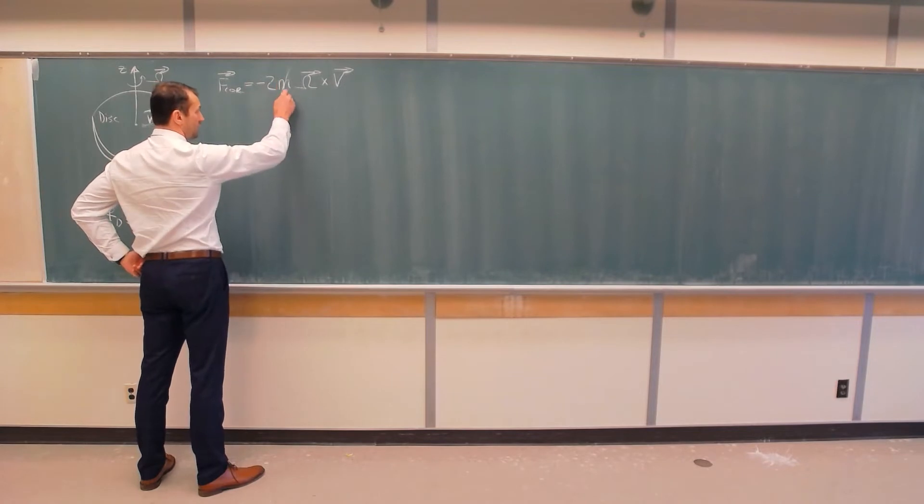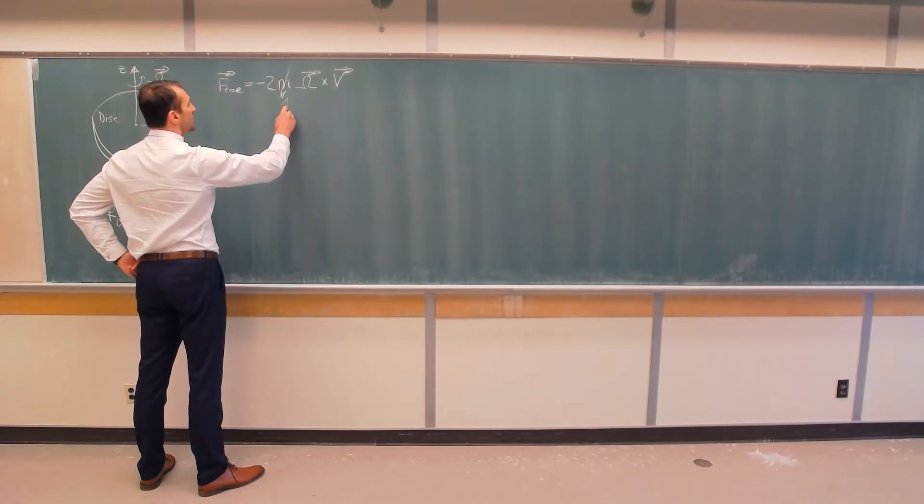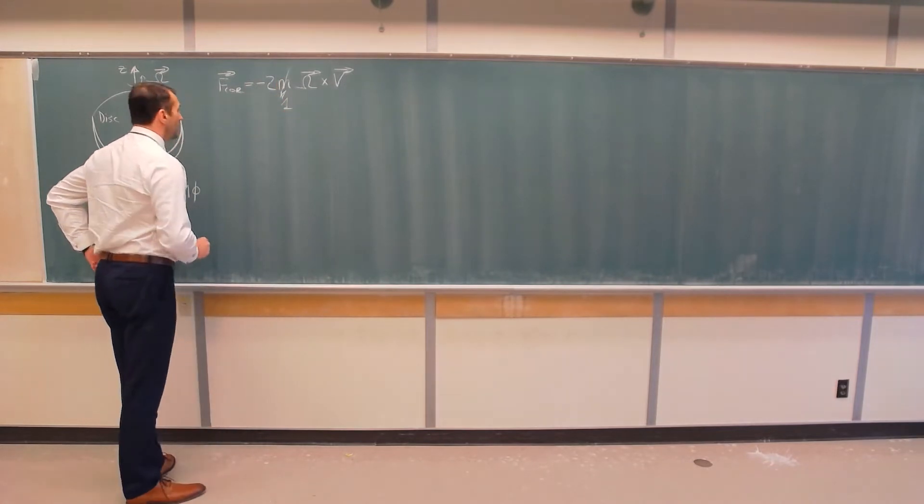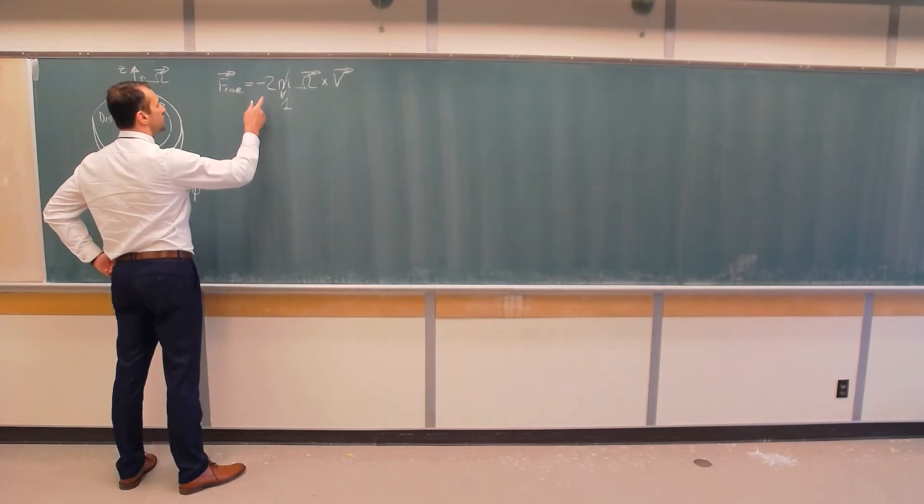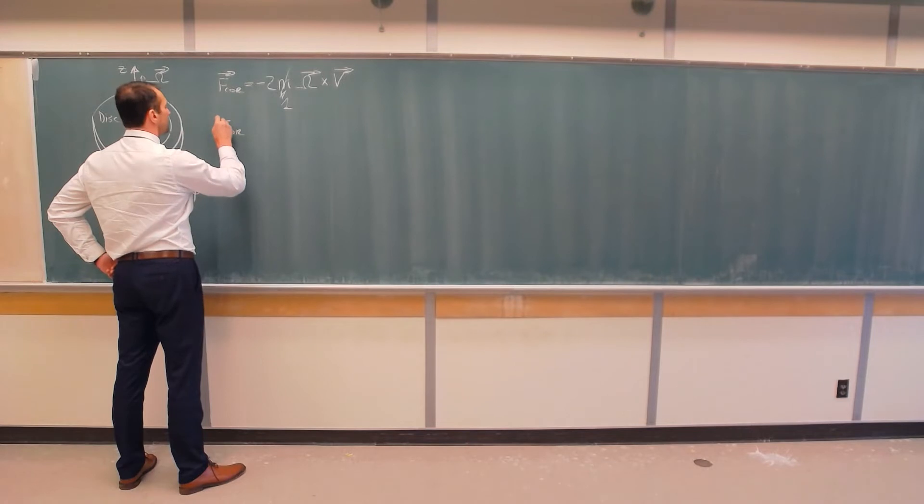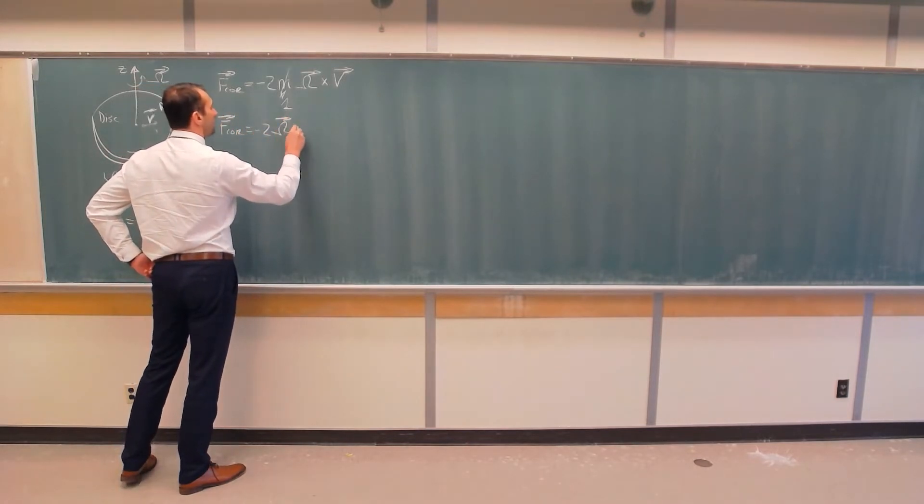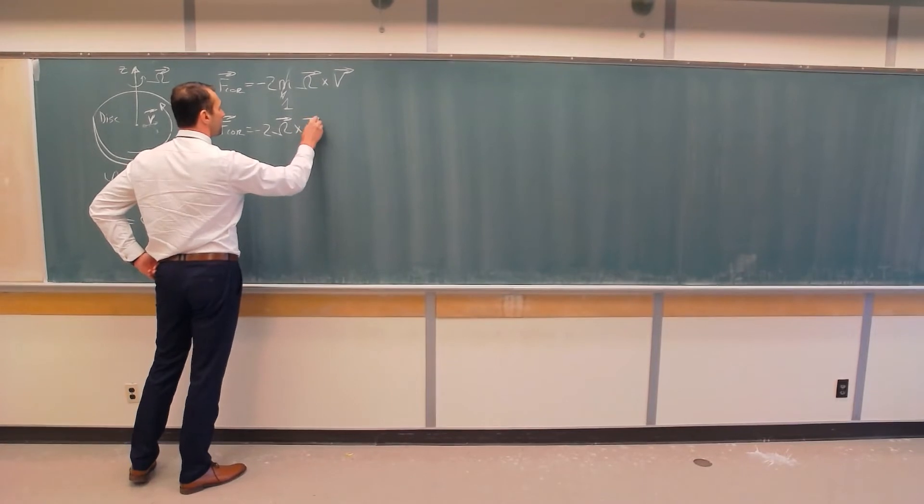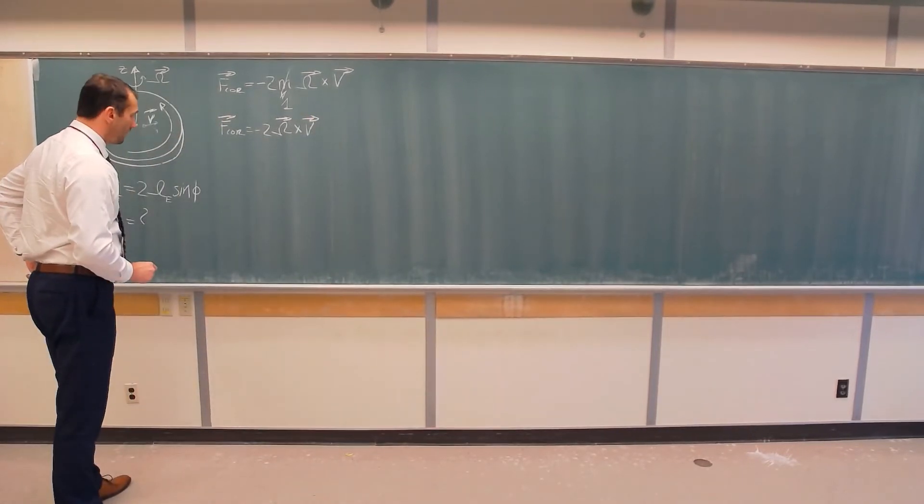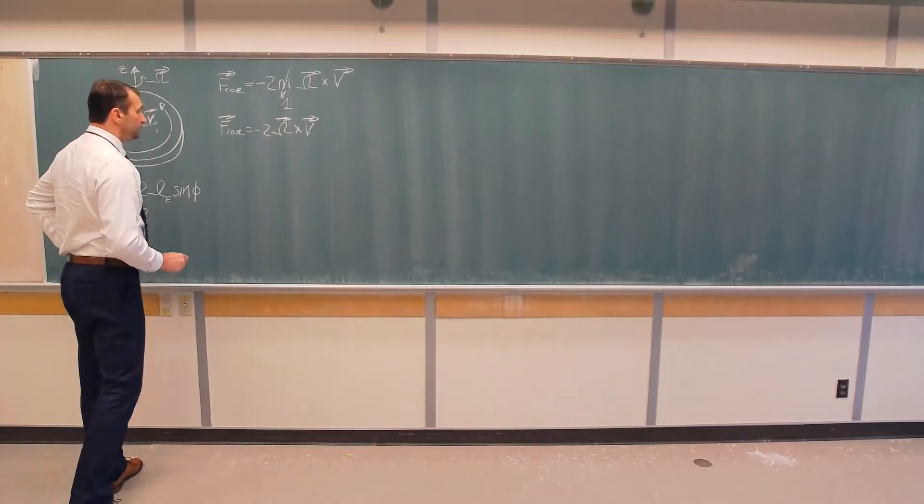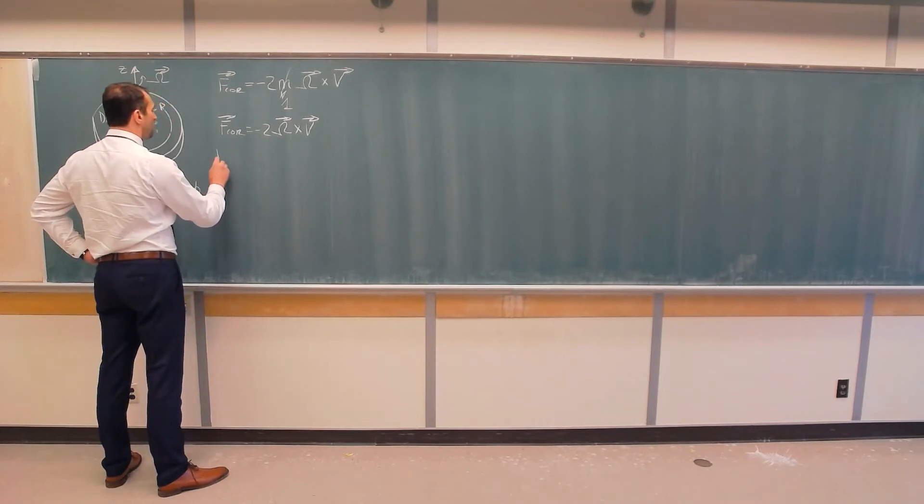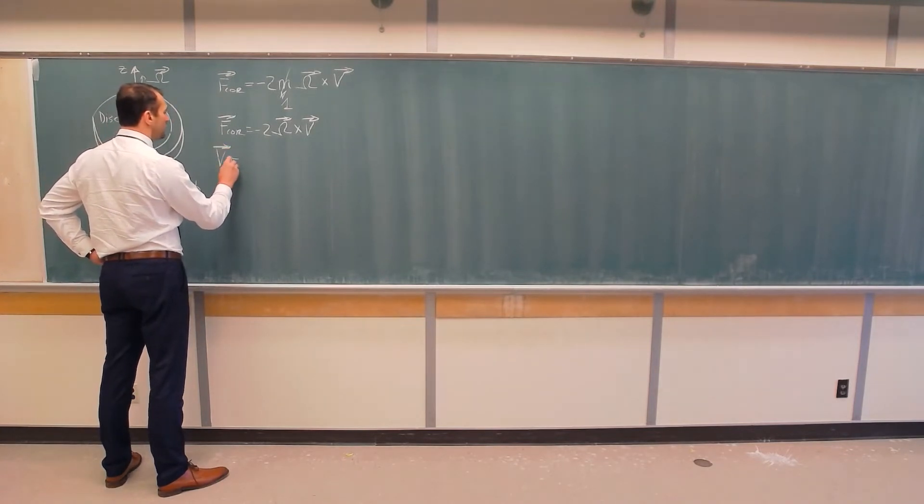So now, without loss of generality, let's assume that this is unit mass, which means that our Coriolis force will be, therefore, simply minus 2 omega cross v. Now, what are the components of velocity v?